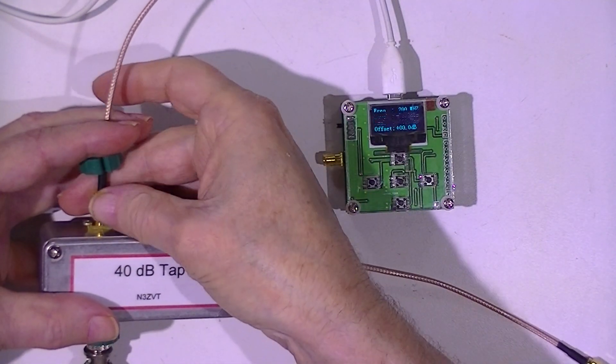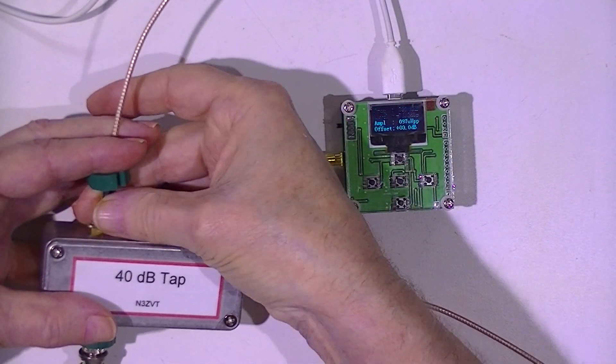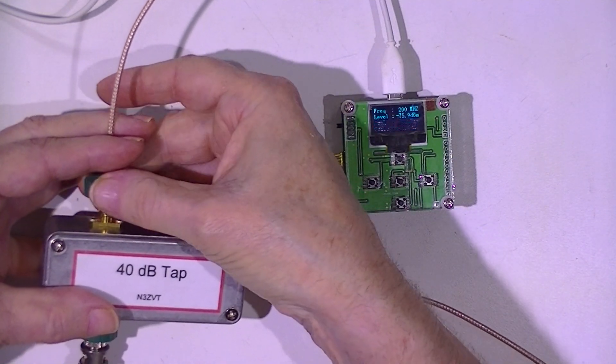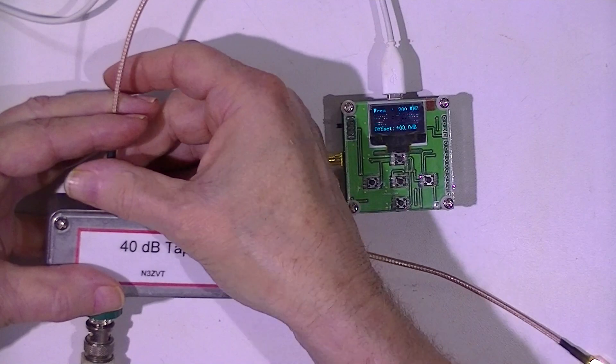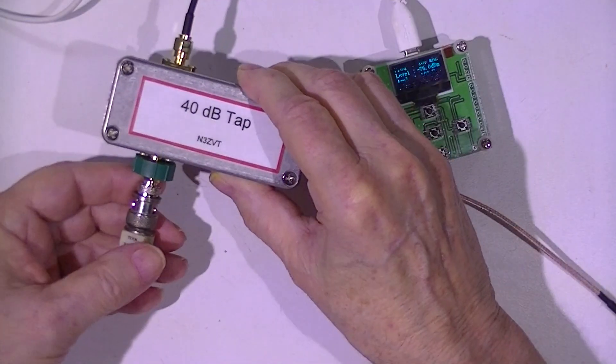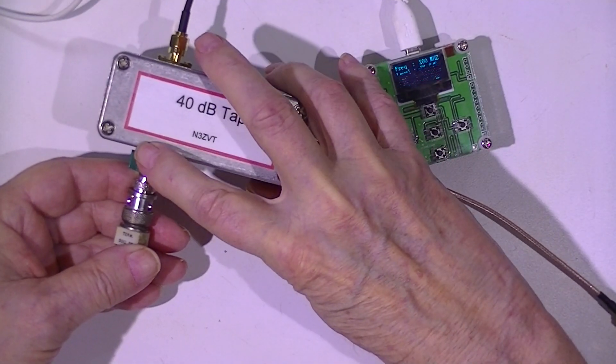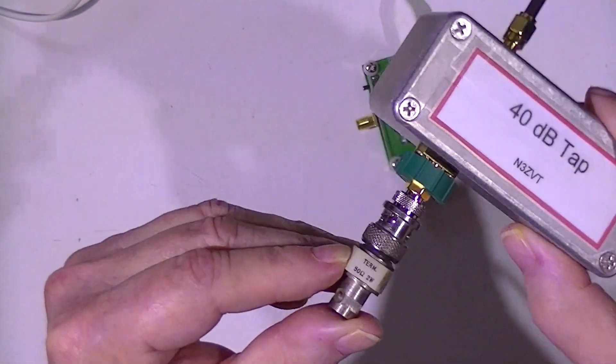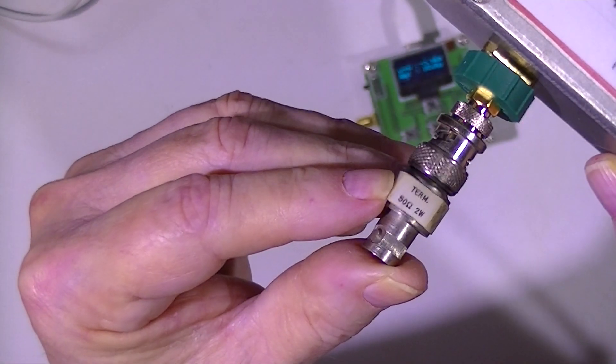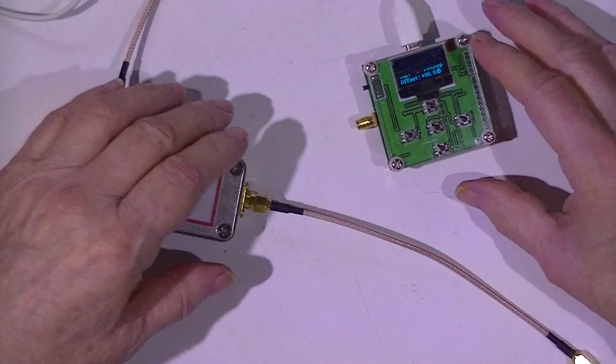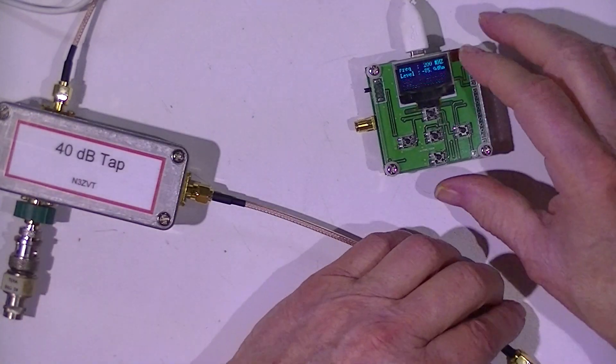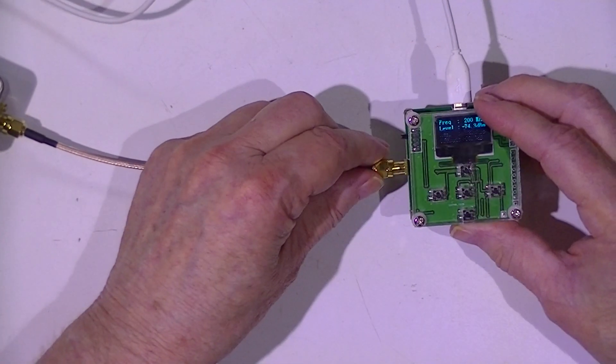So I'm going to move the output from the signal generator to the input, or one of the pass-through connections, on the 40 dB tap. The other side of the pass-through, I've terminated it in a 50 ohm termination. And now I'll put the output from the 40 dB tap into the little OLED wattmeter.